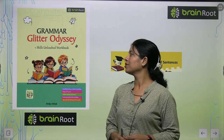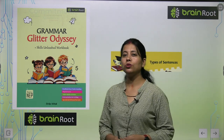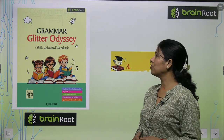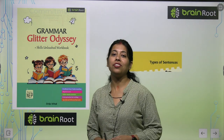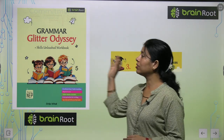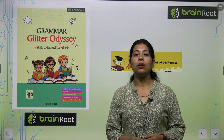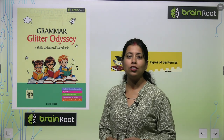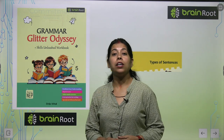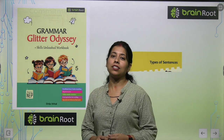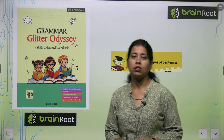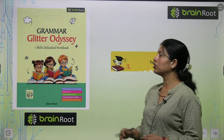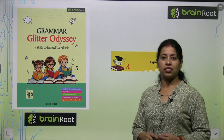Hello, young ones! Welcome to my English grammar class. I am your trainer, Puja. Today we will read Chapter Number Three from our book, 'Grammar Glitter Odyssey of Grade Five' by Brain Root, a product of Amit Publishing House. Today we will start the chapter — the name of the chapter is 'Types of Sentences.'